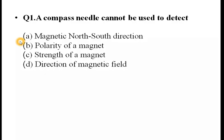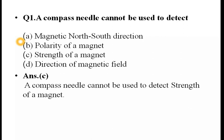First question: A compass needle cannot be used to detect what? A compass needle is used to detect direction using magnetism. The answer is the strength of the magnet — a compass needle cannot be used to detect the strength of a magnet.